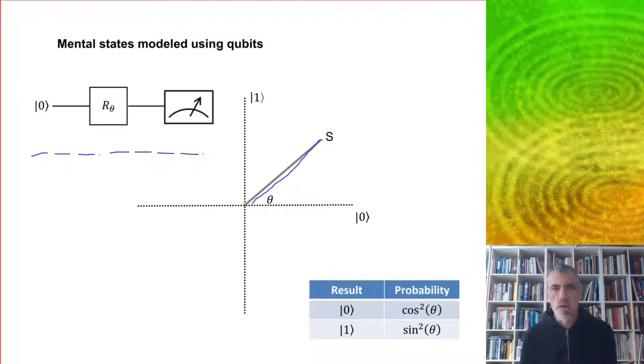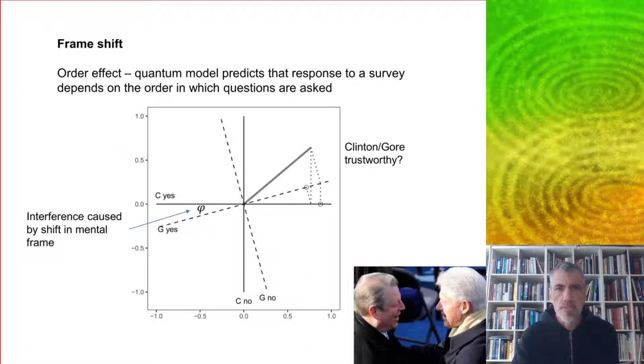Here, zero or one could represent different outcomes or decisions. One of the first applications of quantum cognition was to the order effect. This refers to the phenomena seen with surveys where the response to questions depends very much on the order in which questions are asked. One example was a survey done back in the 90s of whether Clinton and Gore were trustworthy, and it turned out that the answer was sensitive to the order of the questions.